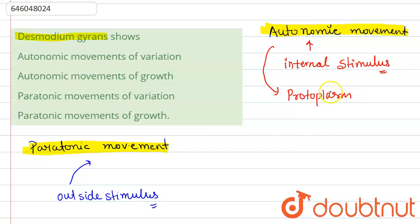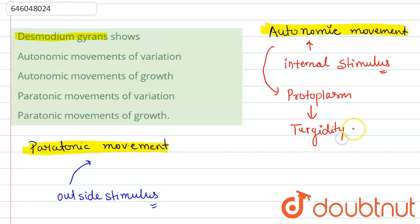This autonomic movement of variation takes place due to the change in the turgidity of the cell. When the cell loses turgidity, the leaves of Desmodium show jerky and lateral movement due to the turgor change, which results in the alteration of the osmotic content.